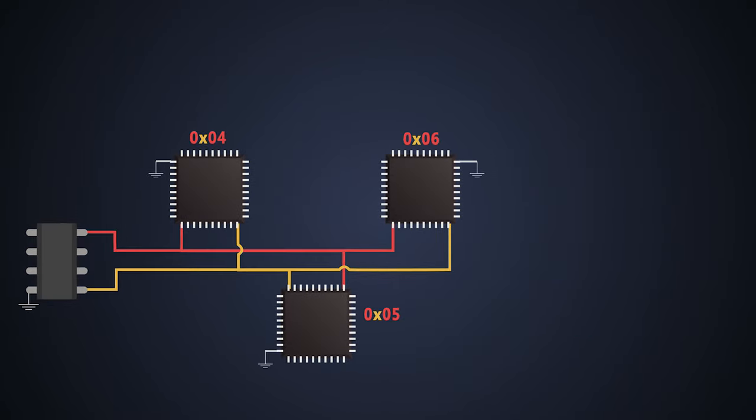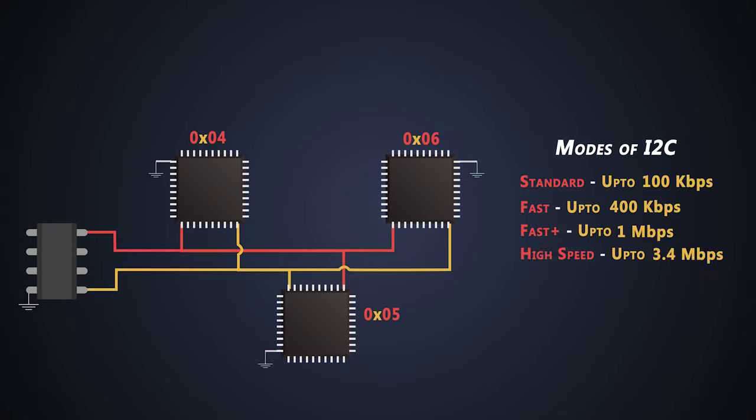There are different modes of an I2C communication protocol and they are right on your screen. These modes show how fast we can transmit or receive the data over an I2C bus. Based upon these modes, whichever is suitable for a slave device, the programmer will configure the I2C bus.